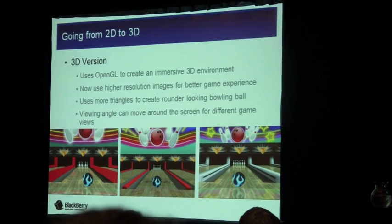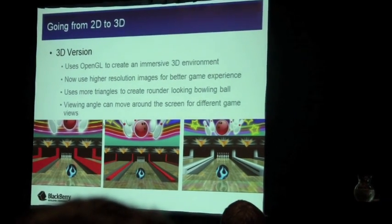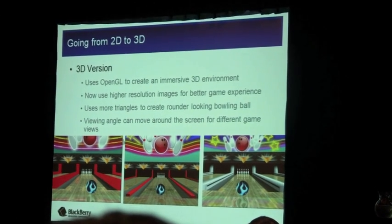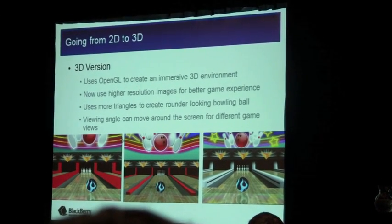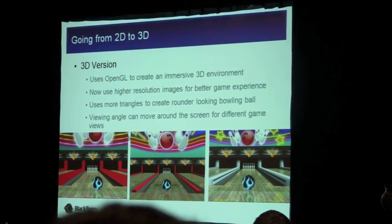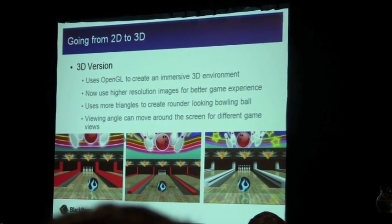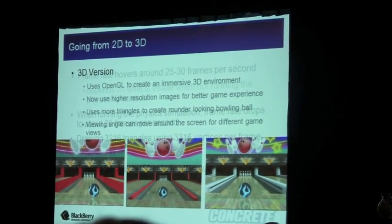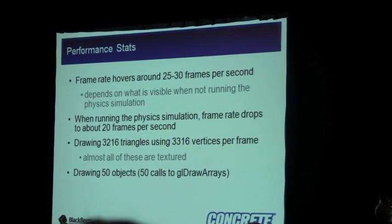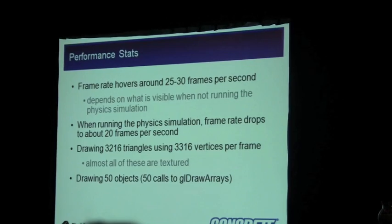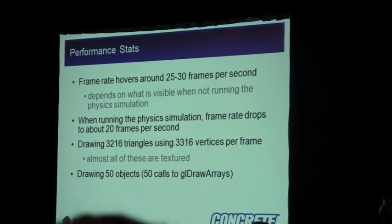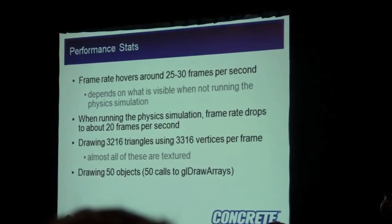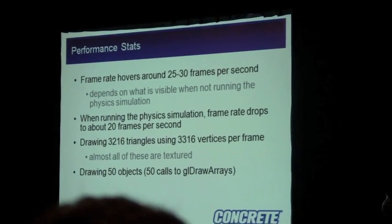Everything else that's static, like the gutters, we create the lighting effect right in the images themselves, and it makes the game run a lot faster. We also now have full screen — with the old version we had the scoring right on screen. Performance stats: it's running about 30 frames per second, getting down to about 20. We draw 3,216 triangles using 3,216 vertices and 15 objects.